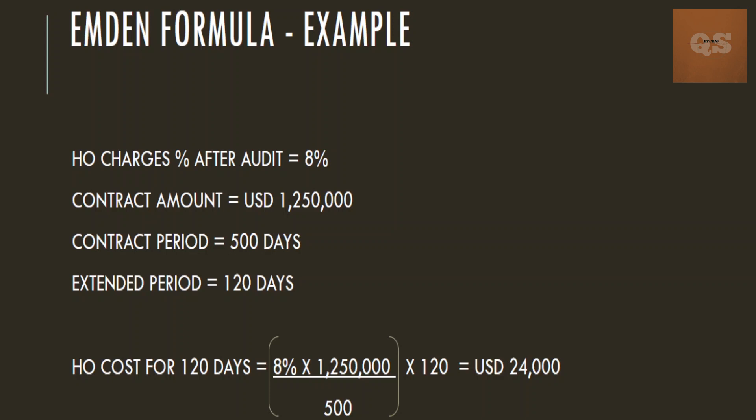For example, you have worked out the head office charges after audit as 8%. Your contract amount is 1.25 million US dollars, your contract period is 500 days, and your extended period is 120 days. Similar to the Hudson formula — except that the percentage is calculated through audit rather than taken from the tender document — it will be 8% multiplied by 1.25 million US dollars, divided by 500, then multiplied by 120 days. When you calculate, you get approximately US dollars 24,000.